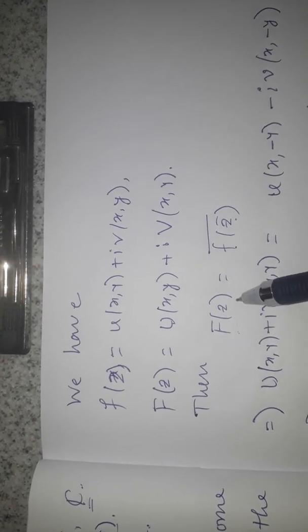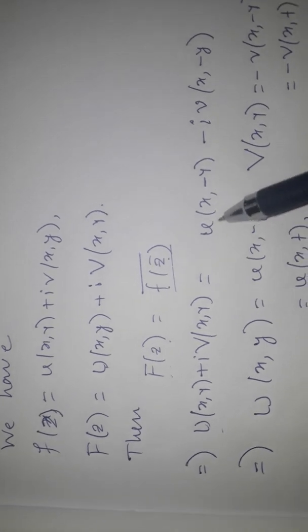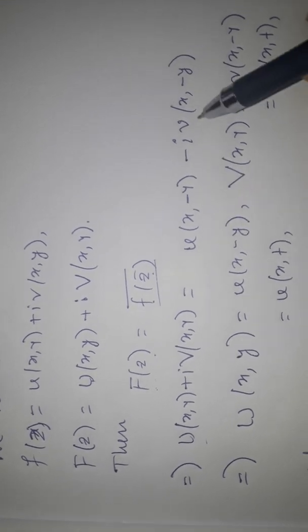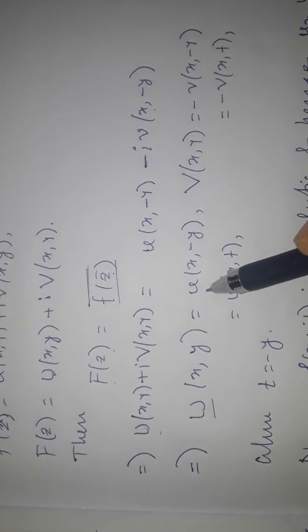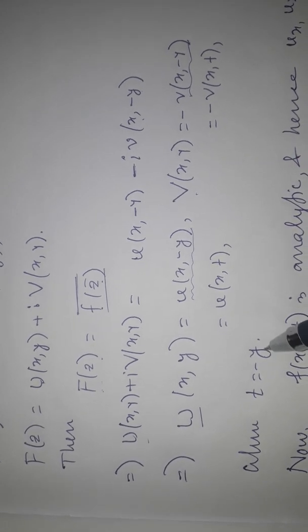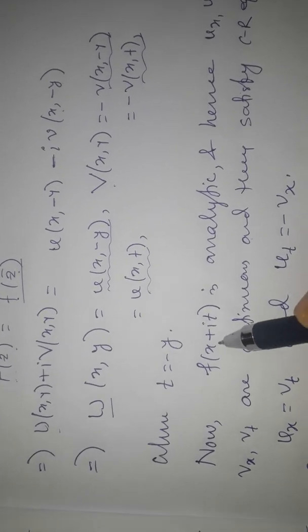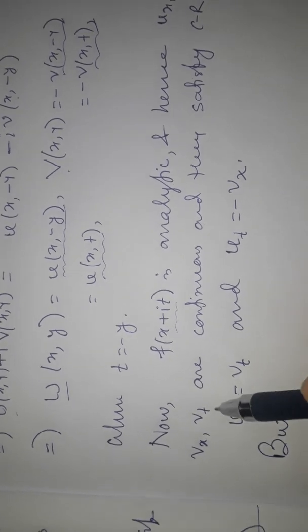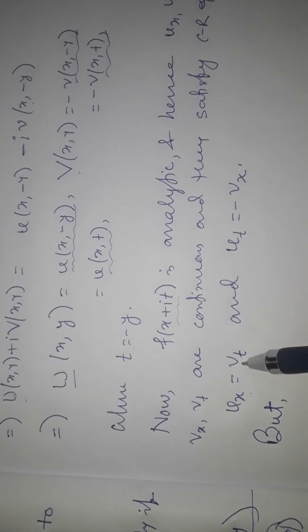Since capital F(z) is the conjugate of f(z-conjugate), and f(z) = u + iv, it follows that U + iV = u(x, -y) - i·v(x, -y). Setting t = -y, we get U = u(x,t) and V = -v(x,t). As a function of x and t, f(x + it) is analytic, so all partial derivatives u_x, u_t, v_x, v_t are continuous, satisfying the Cauchy-Riemann equations: u_x = v_t and u_t = -v_x.